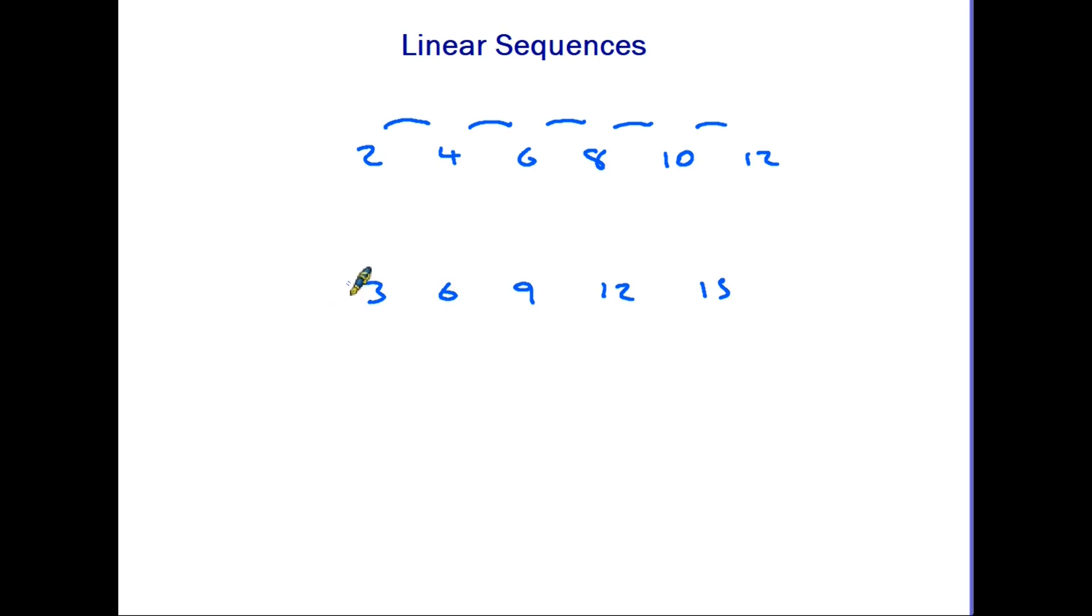Within a sequence each number is regarded as a term. So in this particular sequence here the number 3 would be the first term, number 6 is the second, and the third and so on.